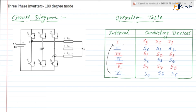During the first interval, switch numbers S5, S6, and S1 are turned ON. During the second interval, S5 is turned OFF and S2 is turned ON. So the newly added switch is S2 and the outgoing switch is S5, meaning S6, S1, and S2 are in conduction mode during the second interval.